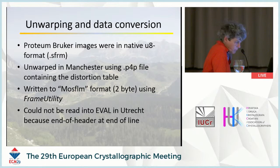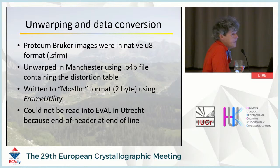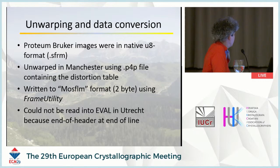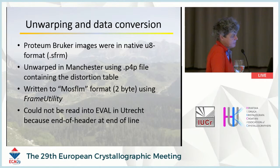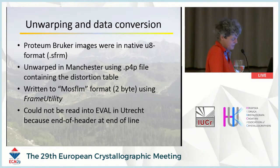The images were unwarped in Manchester and later in Utrecht using the P4P file, which contains a distortion table. They were then written to MOSFILM format using the Bruker frame utility — a two-byte format. It turned out EVAL couldn't read them, and this was actually an error in frame utility: it wrote the end of the header at the wrong position. We corrected this with a Python script, and it has been communicated with Harry Powell so that MOSFILM can now read those as well.